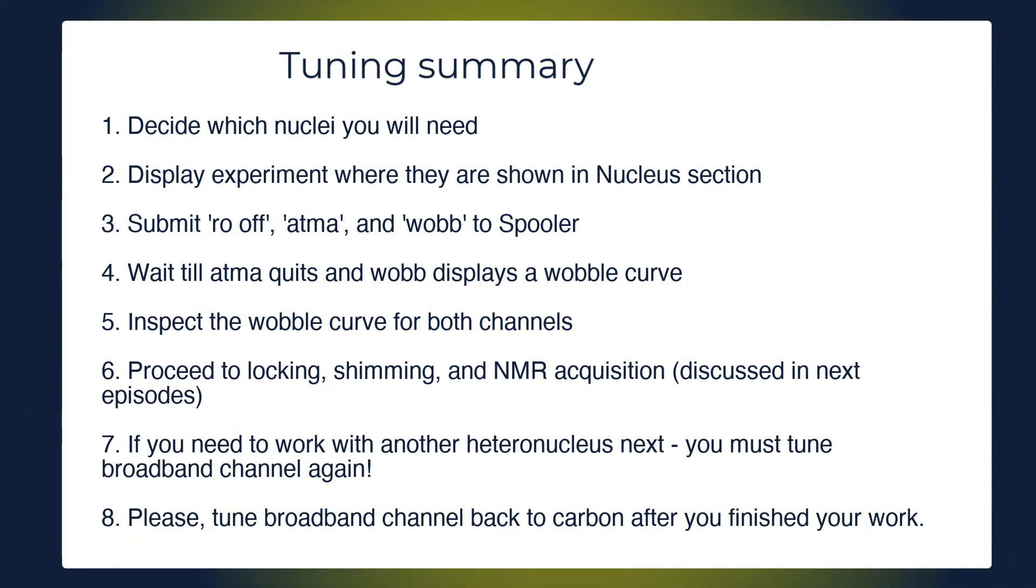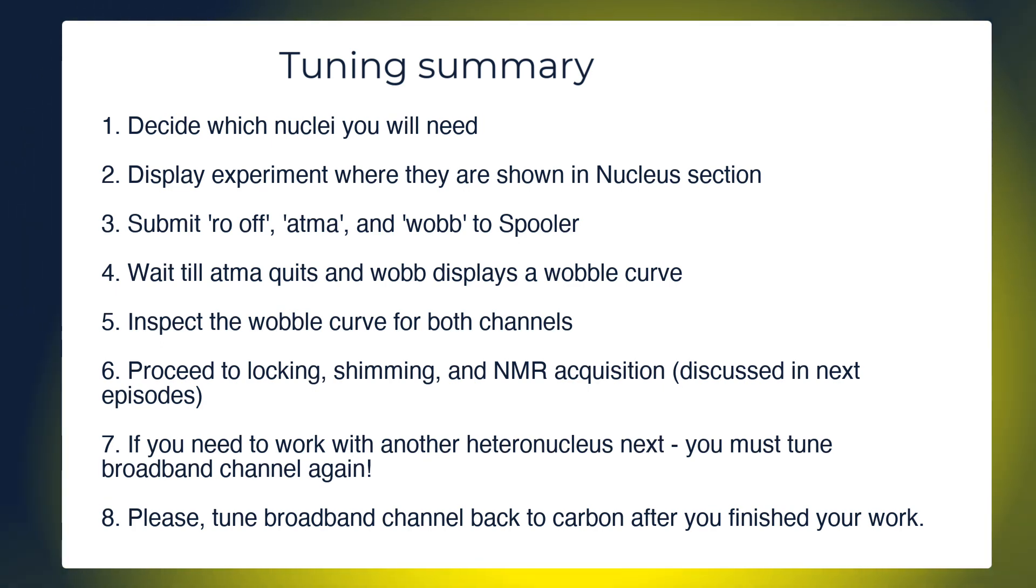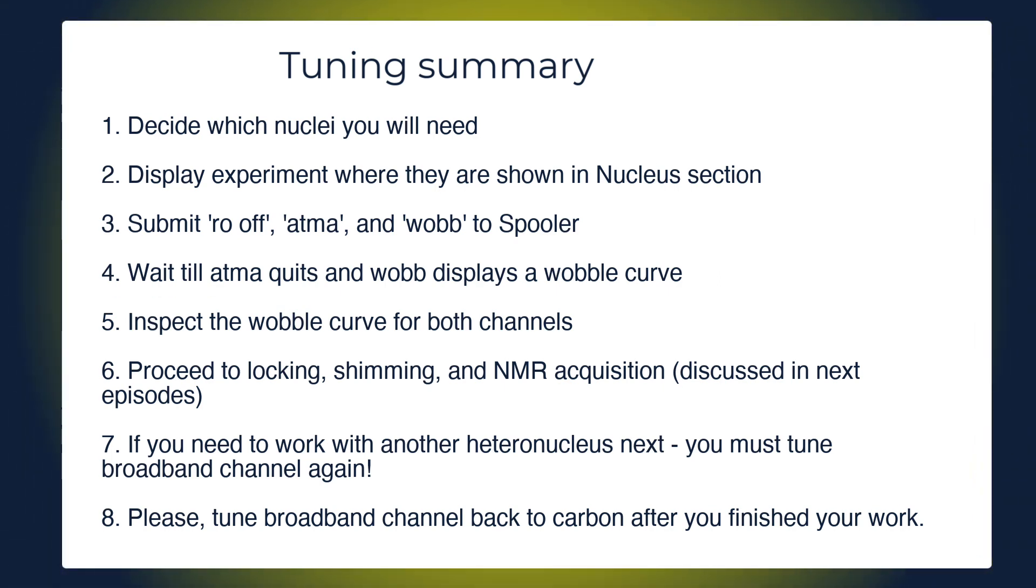In summary, to tune, first decide which nuclei you will need. Display experiment, where these nuclei are shown in the nucleus section. Submit a row of ATMA and WAB to spooler. Wait till ATMA quits and WAB displays a wobble curve. Inspect the wobble curve for both channels. Proceed to locking, shimming and NMR acquisition, discussed in next episodes. If you need to work with another heteronucleus next, you must tune broadband channel again. Please tune broadband channel back to carbon after you've finished your work.